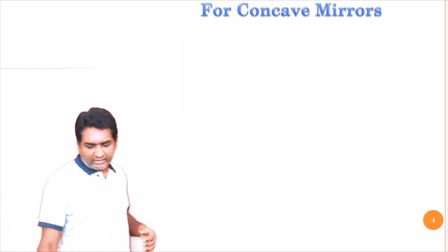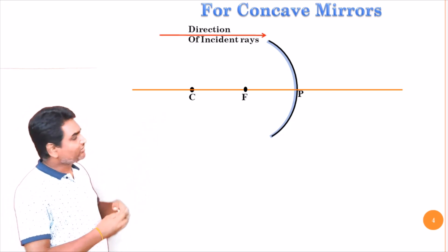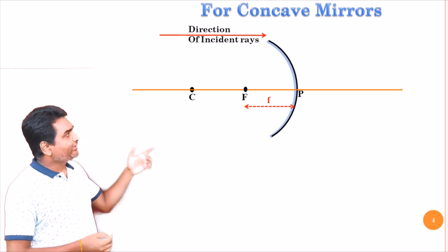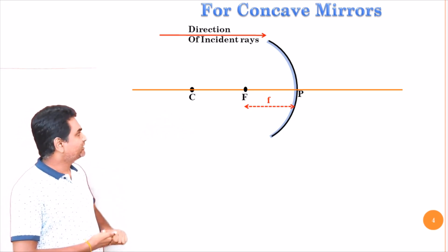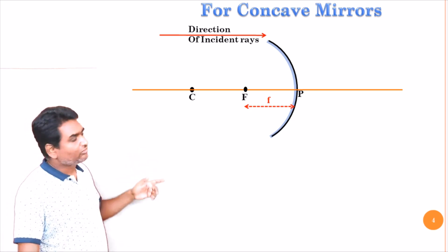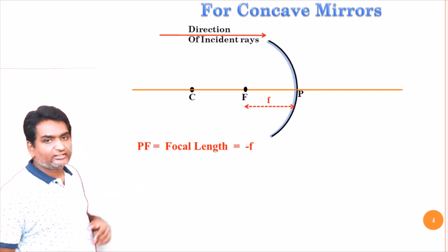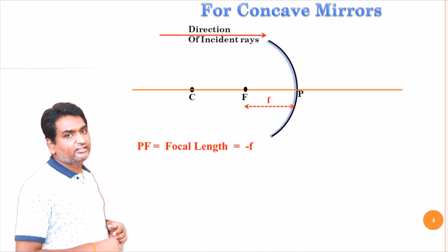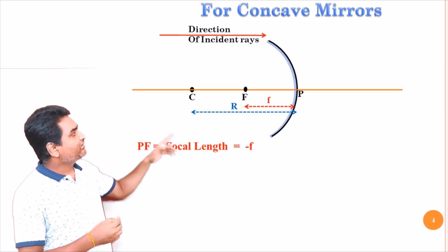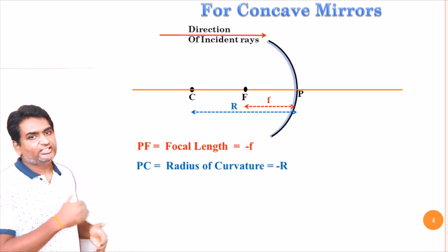I have taken the concave mirror example here. Now let us consider the direction of the incident ray. First we will measure the focal length. Focal length is measured from pole to focal point, and it is measured against the direction of the incident ray, so the focal length is negative. Similarly, the radius of curvature is the distance from the pole to center of curvature, which is also measured against the direction of the incident ray, so radius of curvature is also negative — that is minus R.